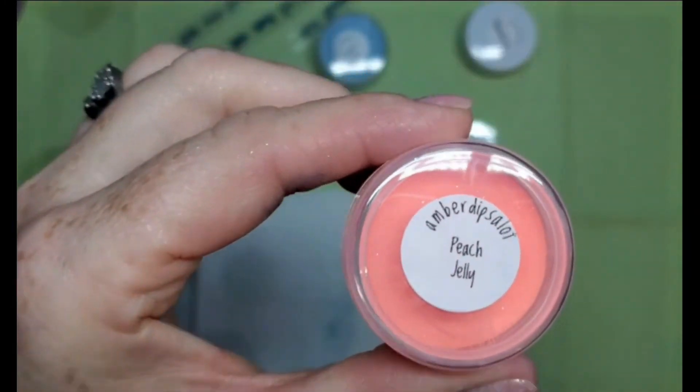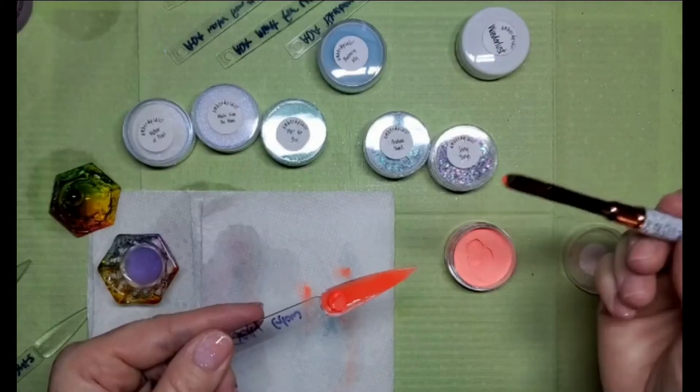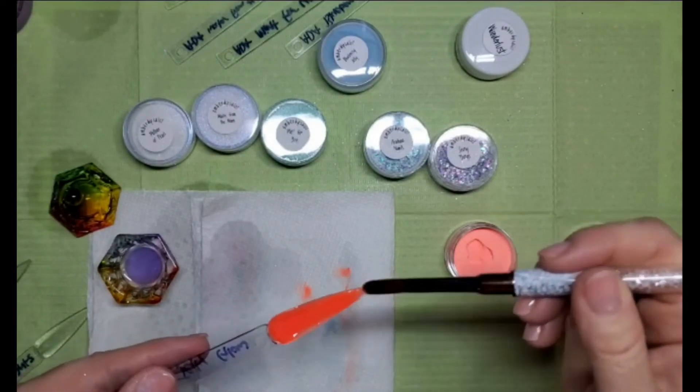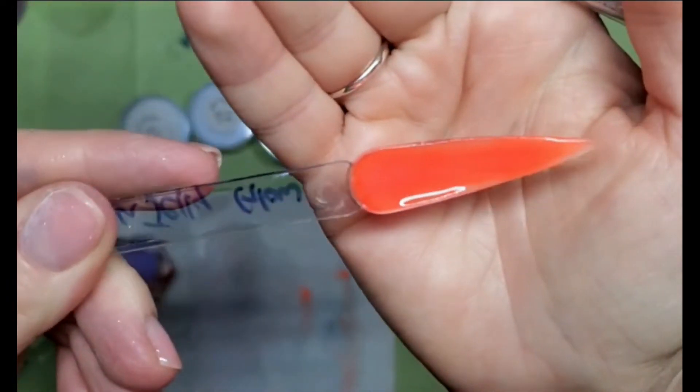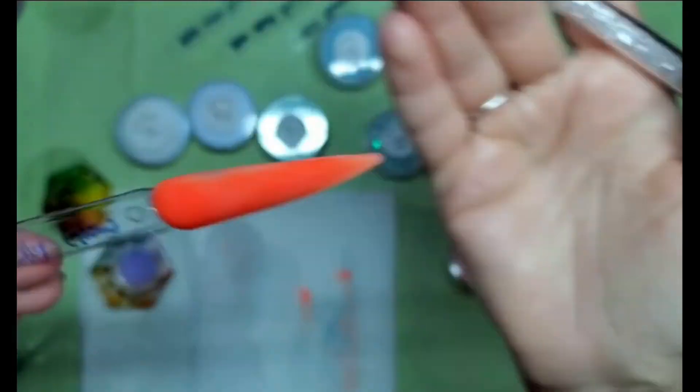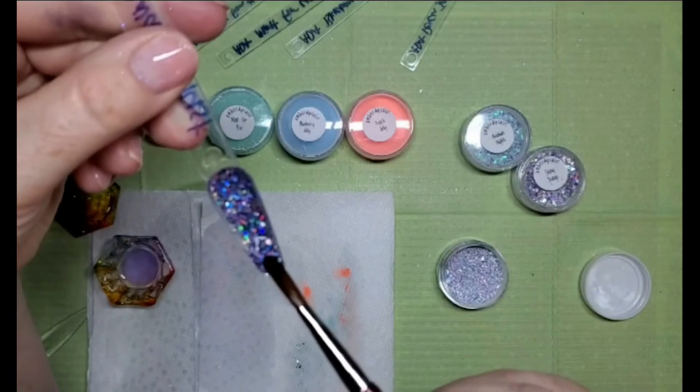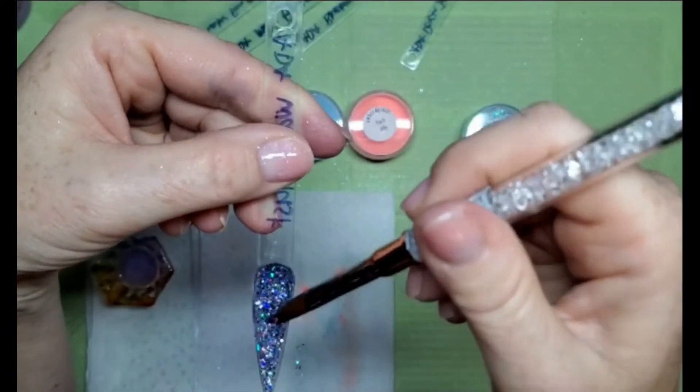And then this is Peach Jelly, the other glow in the dark one. This one's super pretty, it's like a vibrant peach. It's not really - I mean it looks orange on the camera but it is like a bright peach. I don't know, it's just so pretty. This one's beautiful too with all those different colored glitters in it, super pretty.